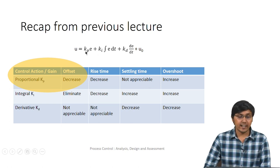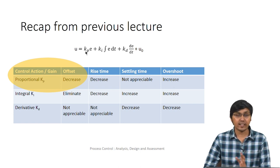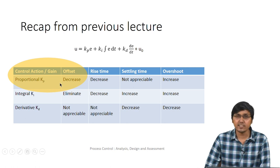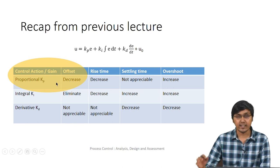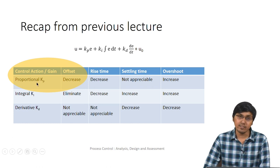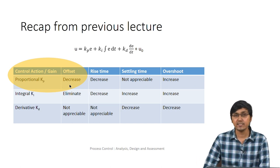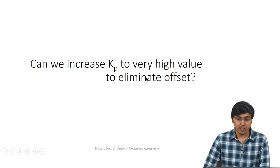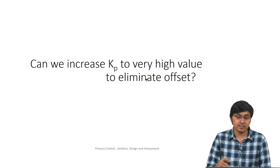From the lecture on the effects of PID gains on the closed-loop controller response, we observed a table showing that with a proportional controller there is a steady-state offset, and as we increase the value of proportional gain Kp, the offset decreases. So one natural question is: why can't we keep increasing Kp? Is there any problem associated with this? That is what we are trying to explore, and we will see what problem it introduces.